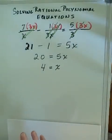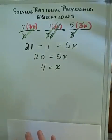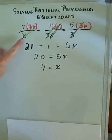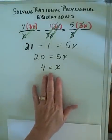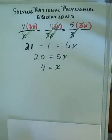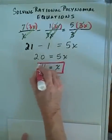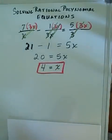The only thing we have to be careful of is not using a number that makes the denominator 0. In this case, only x equals 0 would make the denominator 0. Since our solution is x equals 4, the solution does work. So that is our solution to this rational polynomial equation.